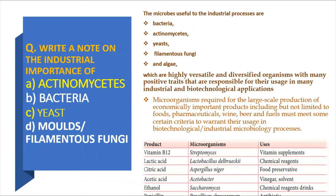The different types of microorganisms which are very useful for industrial purposes are bacteria, actinomyces, yeast, filamentous fungi, and even algae in single cell protein production. These are all highly versatile and diversified organisms with many positive traits responsible for their usage in many industrial and biotechnological applications. These microorganisms are required for large scale productions of economically important products such as foods, pharmaceuticals, wine, beer, and fuels, and must meet certain criteria for their usage in biotechnological and industrial microbiology processes.